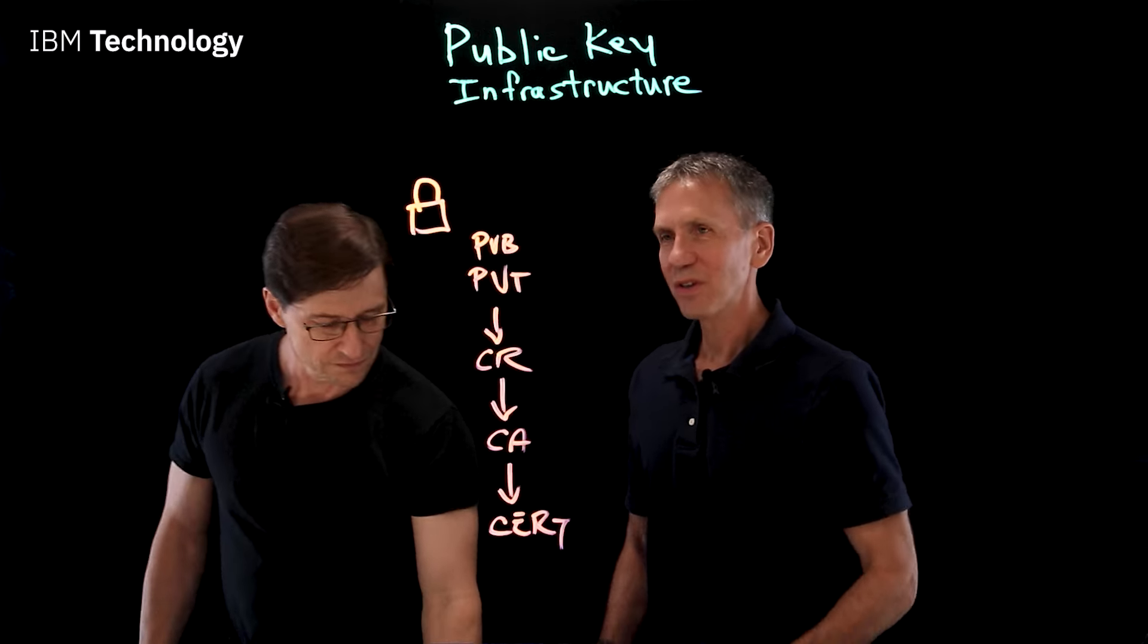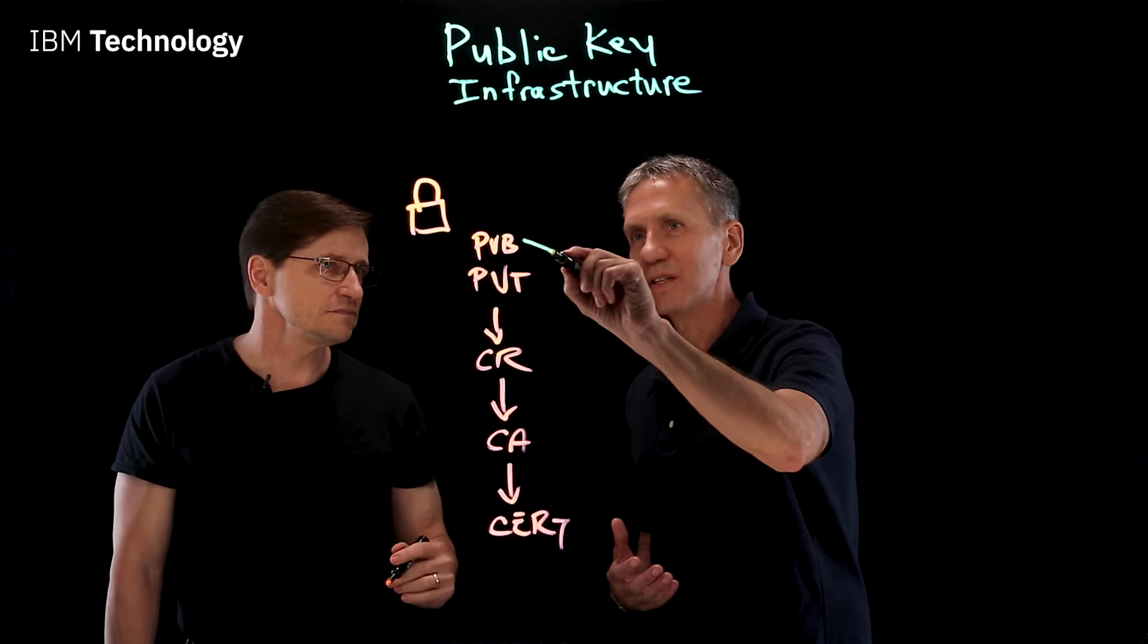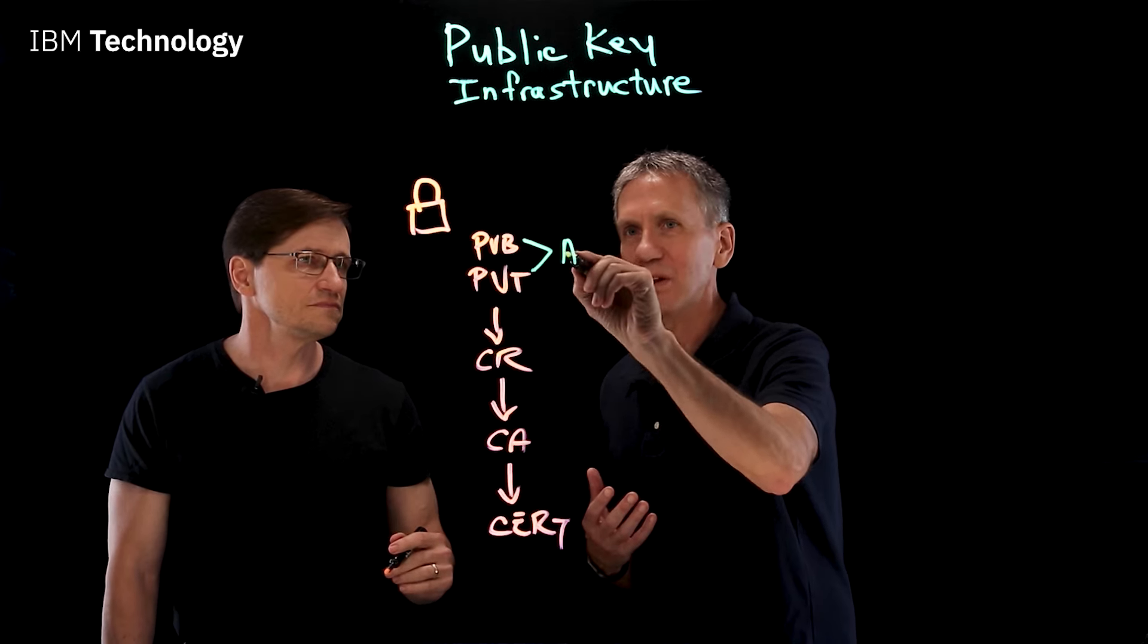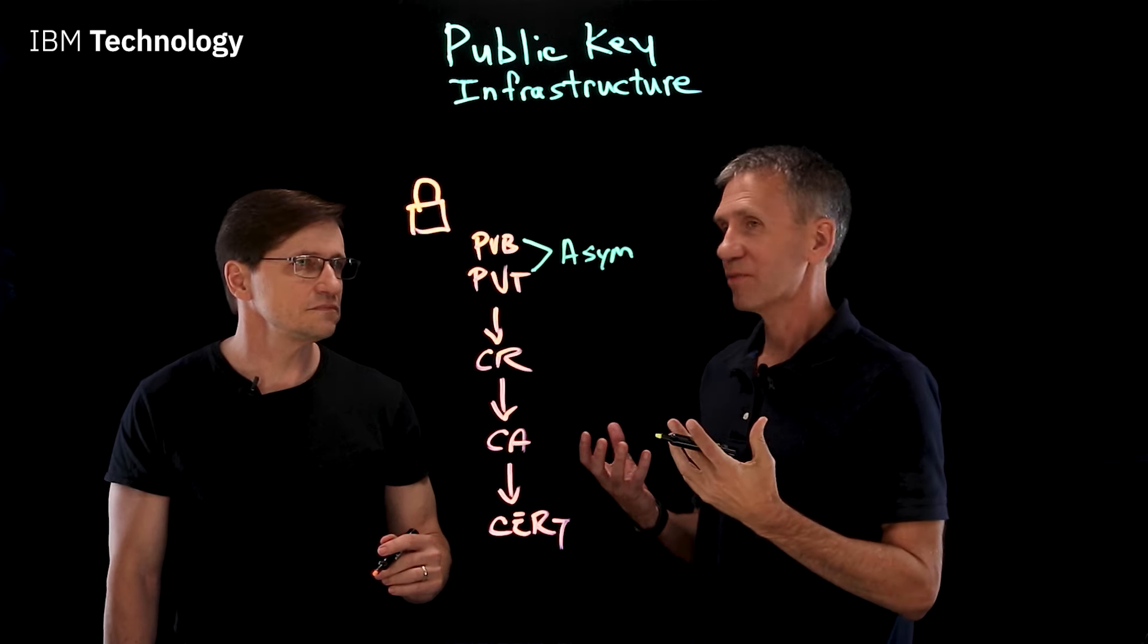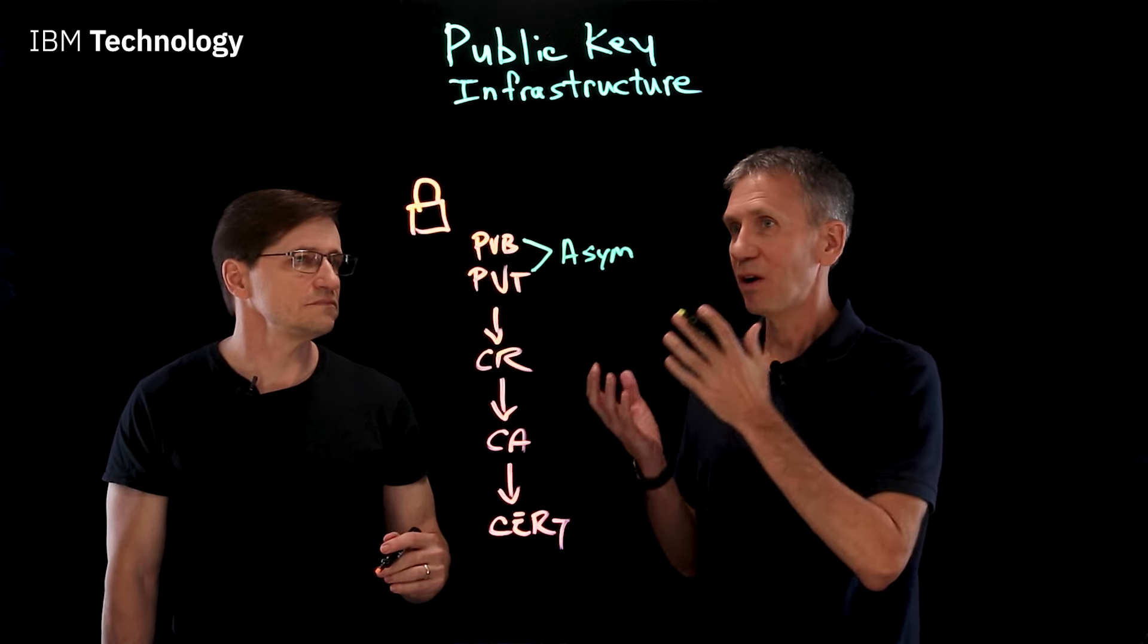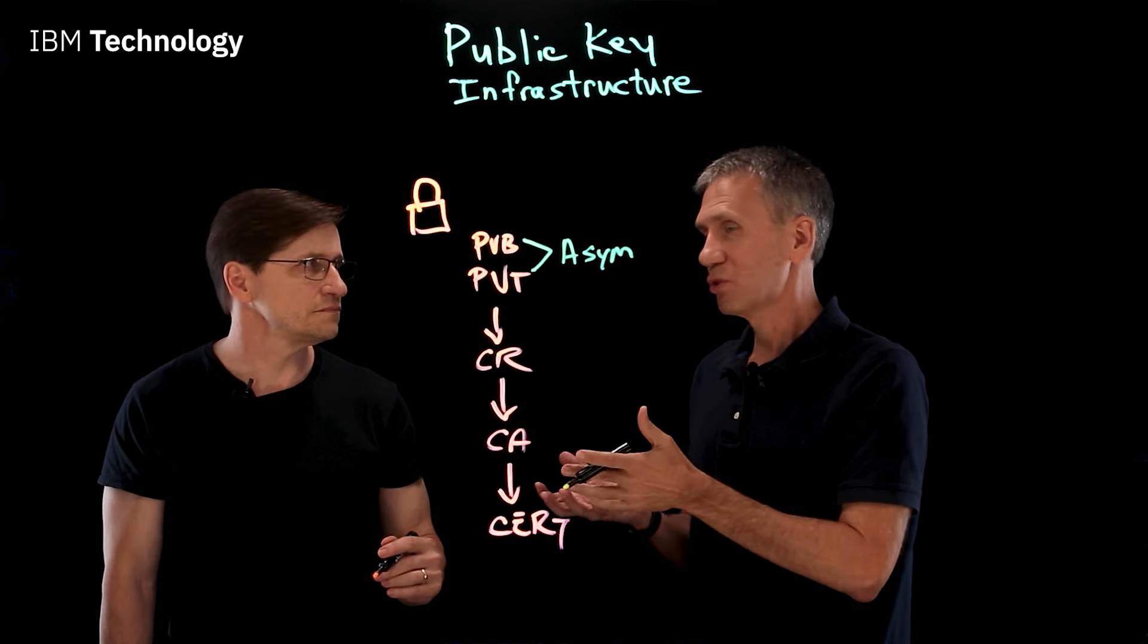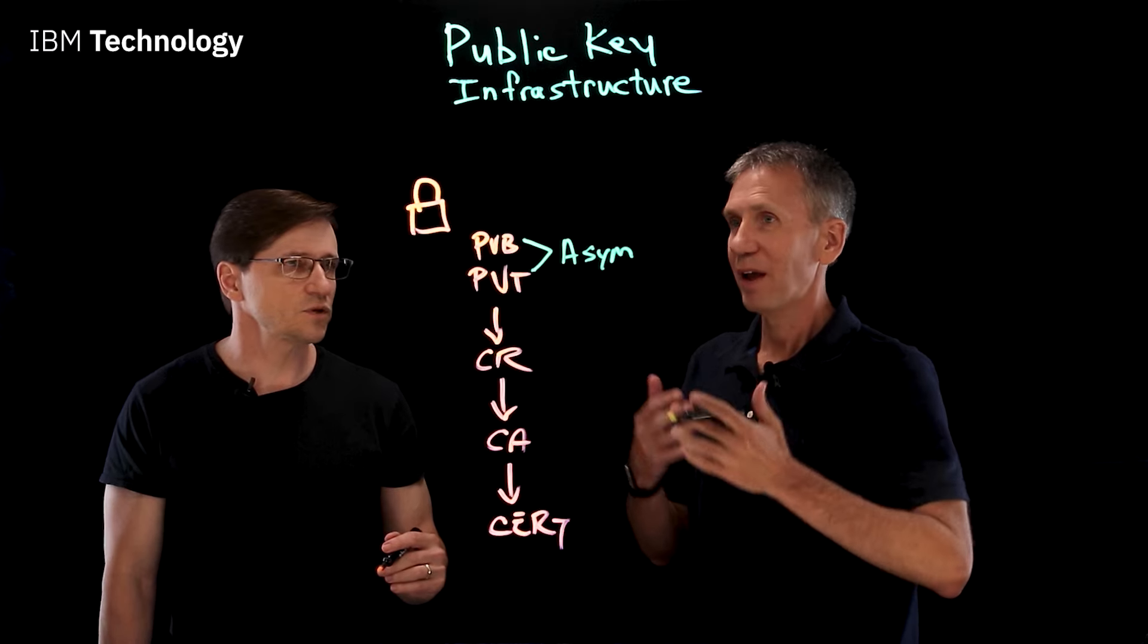Yeah, sure. So one of the things that was happening when you did this is you generated this key pair, a public and private key. Well, there's this thing that we call asymmetric cryptography. Asymmetric because there's two keys involved. They're mathematically related with this special property that whatever you do with one of the keys, you can only undo with the other. So if you encrypt the message with one of the keys, then you can only decrypt the message with the other. And vice versa.